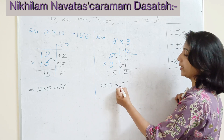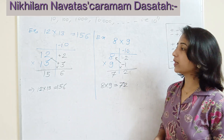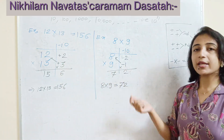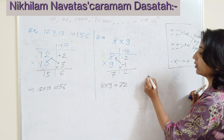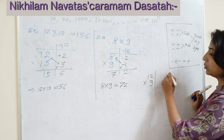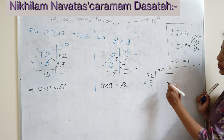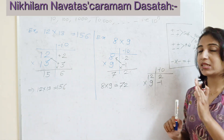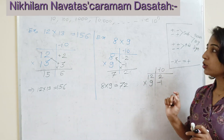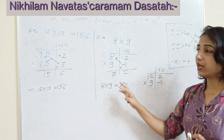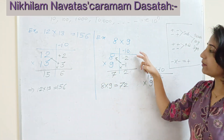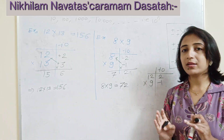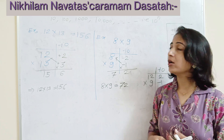Now what if we want the product of 12 and 9 — one number is greater than the base and one is less? Here subtracting 10 gives +2 for 12 and −1 for 9, so we get one positive and one negative deviation. How to solve this type of mixed-sign case will be discussed in the next video. First we cover cases where both numbers are greater than, or both are less than, the base.